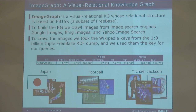To build this image graph, we started with Freebase 15K, then crawled images from the web. The resulting database contains around 15,000 entities, 1,300 relationships, and in total we have around 800,000 images.